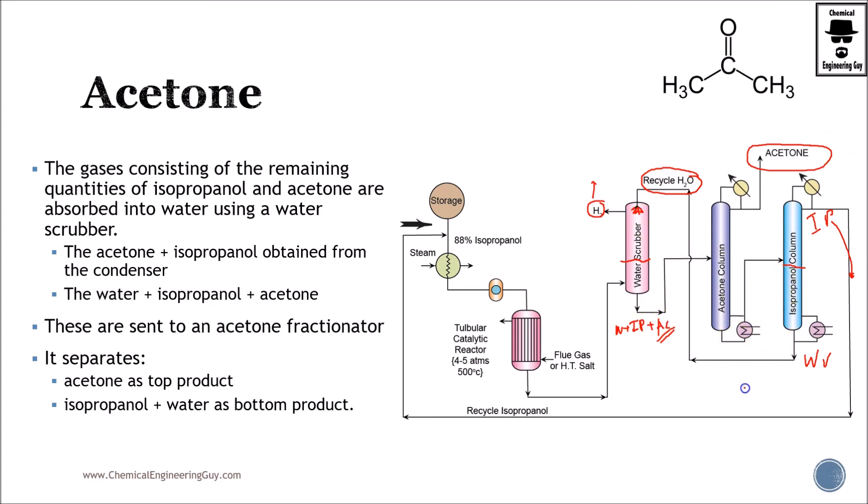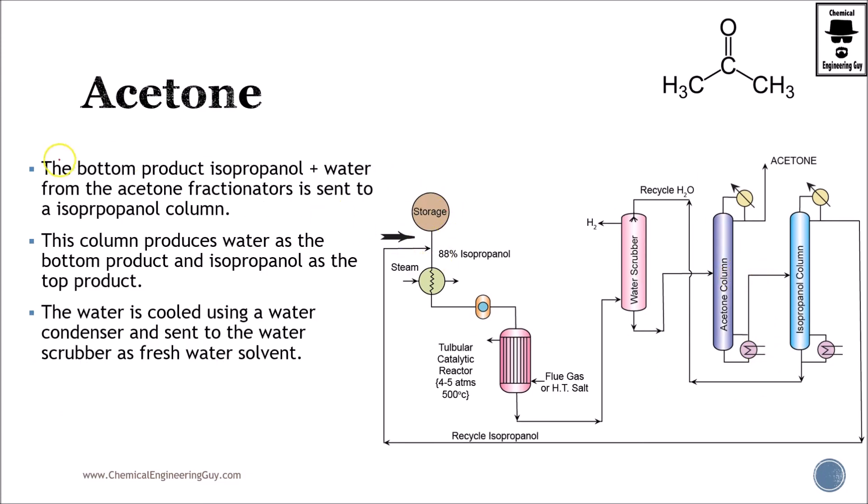In real life of course you need to add extra water here in order to counterbalance the loss. The column produces water as the bottom product and isopropanol as the top product. Isopropanol is not completely pure. The water is cooled down using a water condenser and sent to the tower.